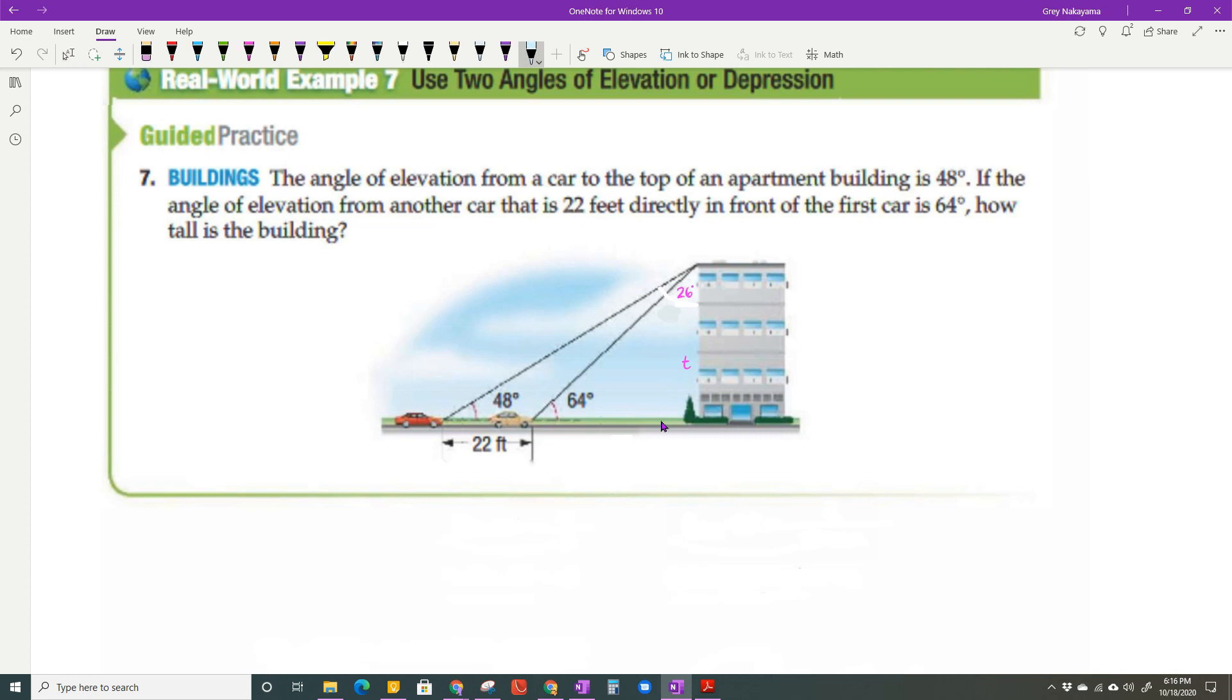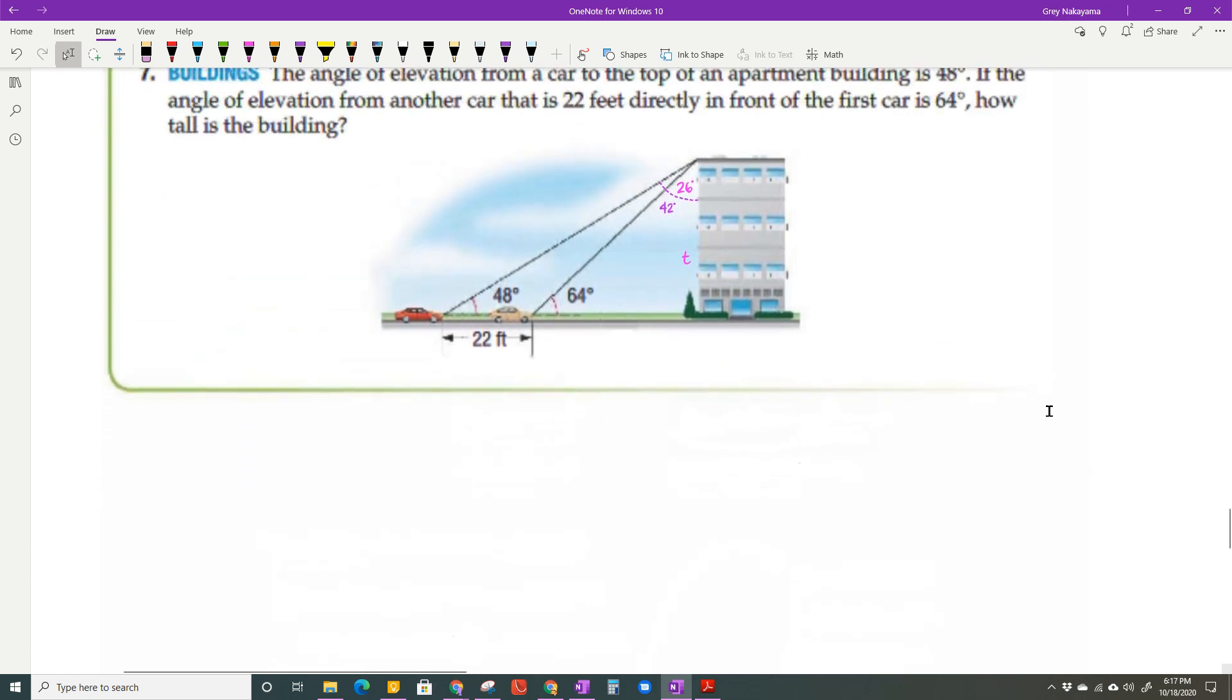If you want to do the other triangle, 48 degrees, then this whole angle here is going to be 90 minus 48, which is 42 degrees. In solving for T, the bottom side I'm going to label as X. That means I could write a ratio: the tangent of 64, tangent is opposite over adjacent, so tangent of 64 is T over X.